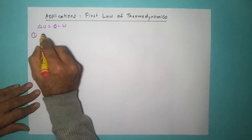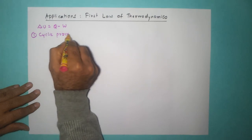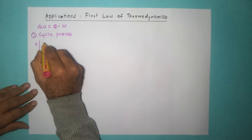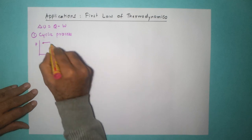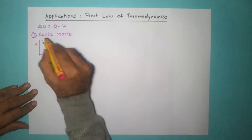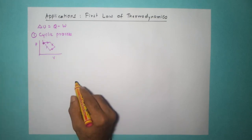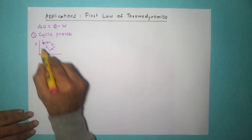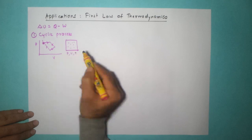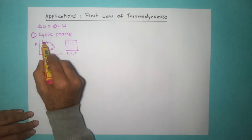Let us begin with the cyclic process. The cyclic process is one in which we have a pressure-volume curve. It starts at one particular location, takes a particular path, and then goes back. So it starts from point 1, goes along a path, and comes back to that point. The state of the gas — pressure, volume, and temperature — at the beginning and at the end of the cycle is the same, because we are coming back to the same point.